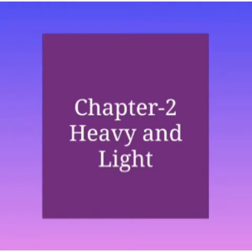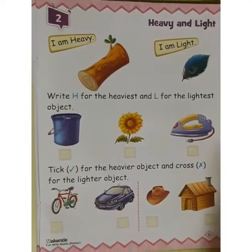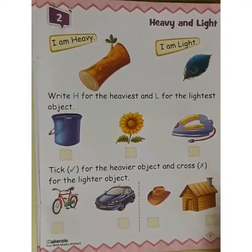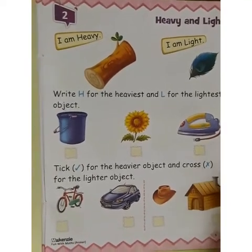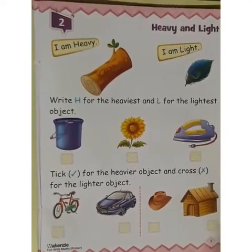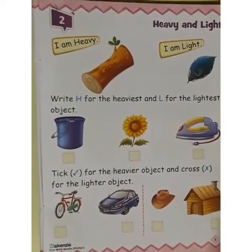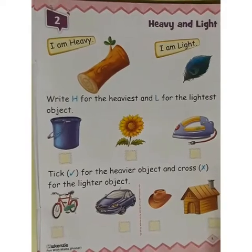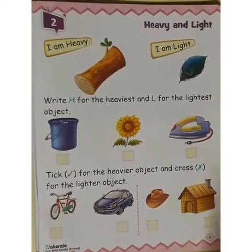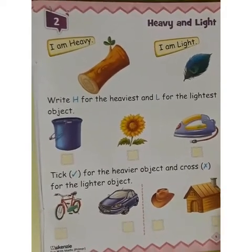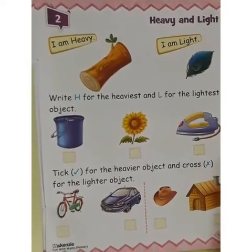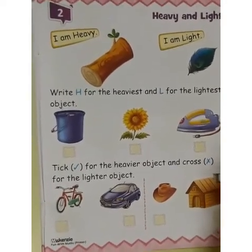Students, you have to discuss the second chapter: Heavy and Light. Heavy means 'Bari,' and light means 'Hulki.'